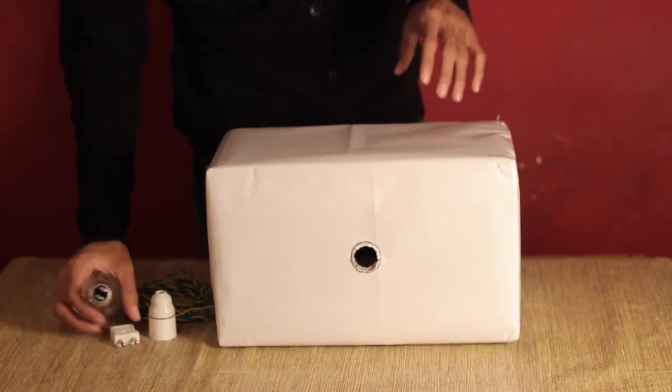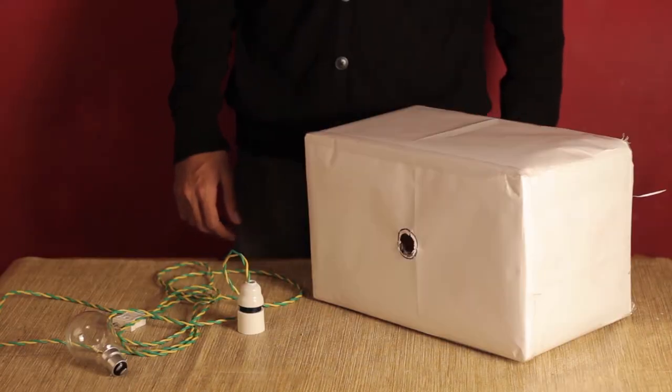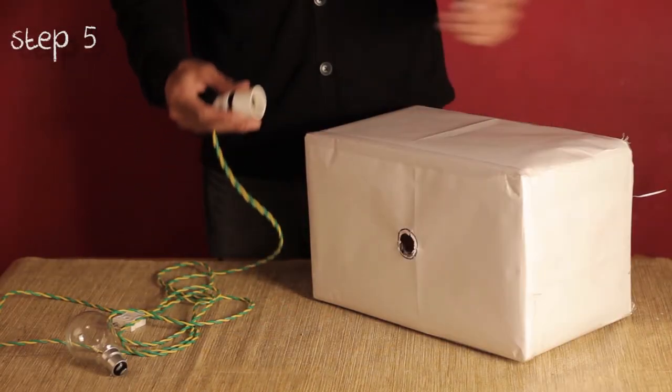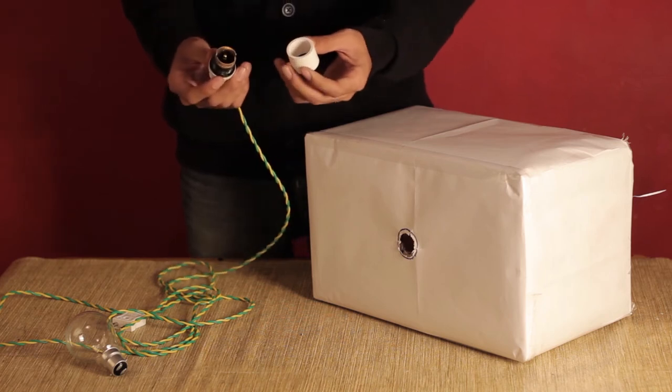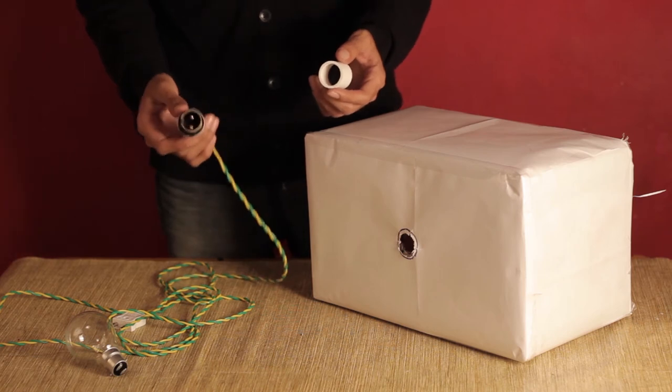Once you have the circle cut out, take the bulb holder, the clamp plug, and wire it, and make sure everything is in place and the bulb is working. Once you make sure that the bulb is working, take the bulb holder apart into two pieces and fix it through the circle. If you do not have the same kind of bulb holder, you can use glue or tape to do the same.